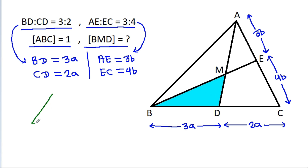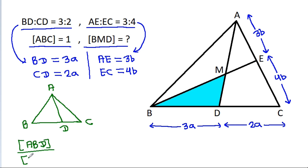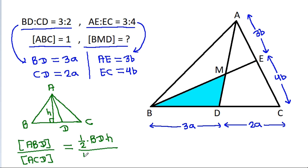So, in any triangle A, B, C and D, area of ABD by area of ACD it will be equal to (1/2 × base BD × height H) by (1/2 × base CD × height H). So it is equal to BD by CD.